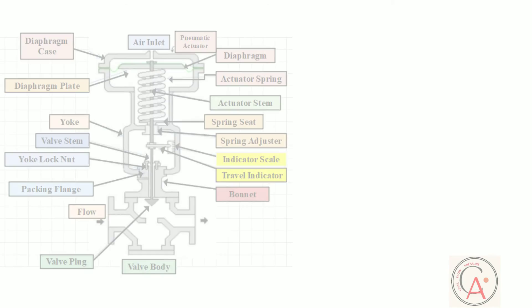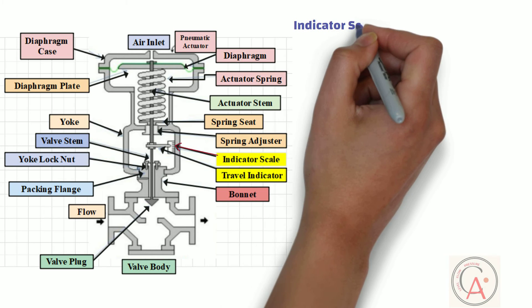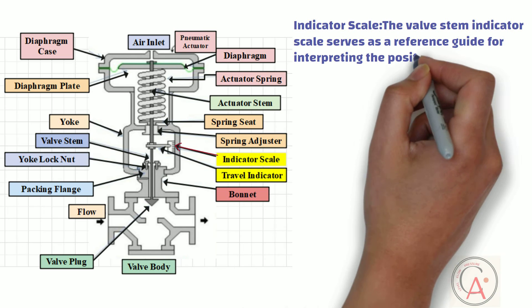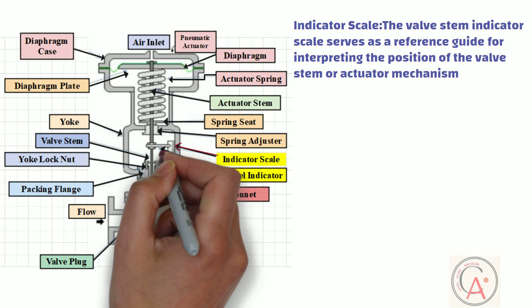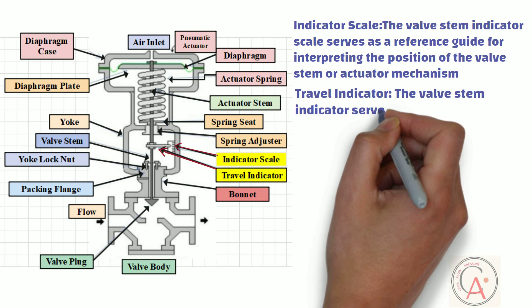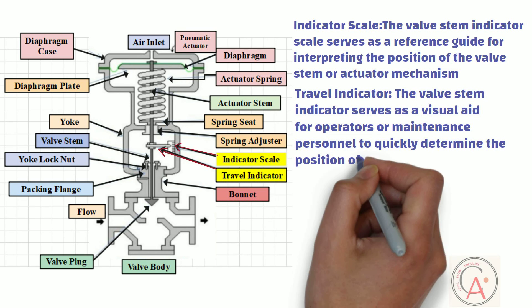As you can see, this part is known as the indicator scale. The valve stem indicator scale serves as a reference guide for interpreting the position of the valve stem or actuator mechanism to specific flow conditions or set points. This part is the valve stem indicator. The valve stem indicator serves as a visual aid for operators or maintenance personnel to quickly determine the position of the valve plug or disc within a pneumatic control valve.